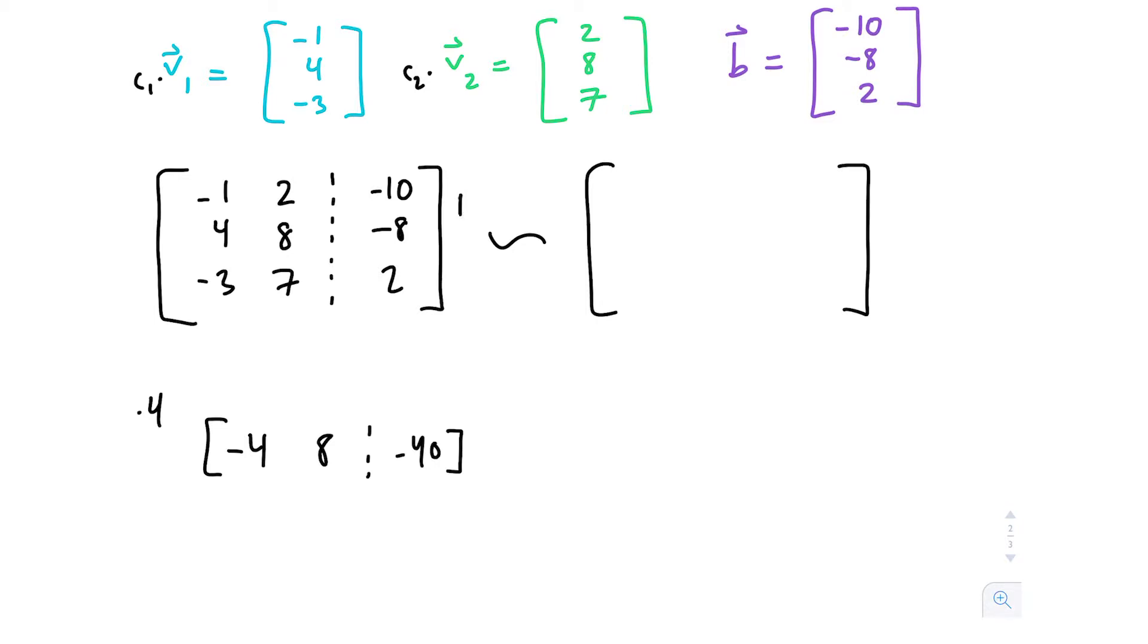Then our row transformation R2 plus 4R1, and we're going to put that back into R2. We're not changing R1 and we're not changing R3, but with R2 we're going to add this row and the row we had before. Negative 4 plus 4 is 0, 8 plus 8 is 16, negative 40 plus negative 8 is negative 48.